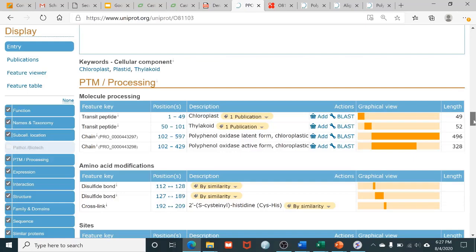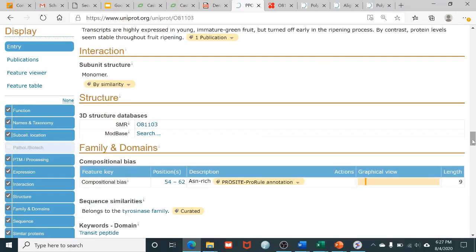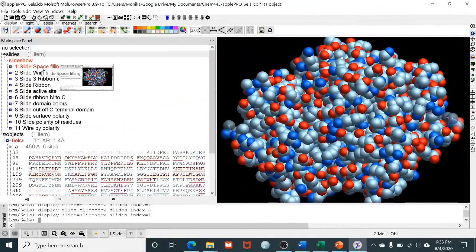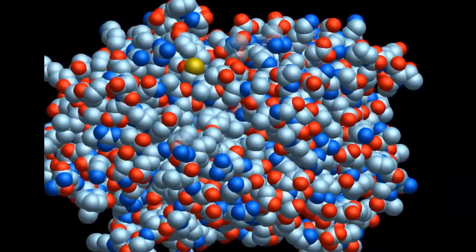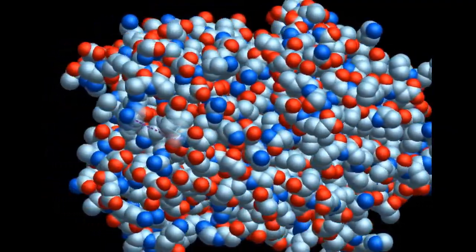For polyphenol oxidase from apricot, there is no crystal structure, but there is a similar protein, another polyphenol oxidase with a structure. So here you see a crystal structure of apple PPO displayed in a ball model, in a space filling model.